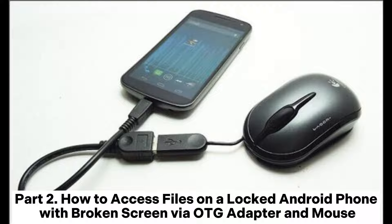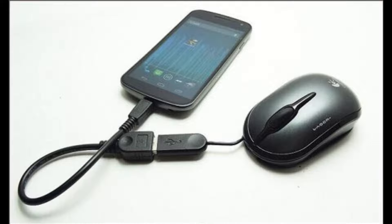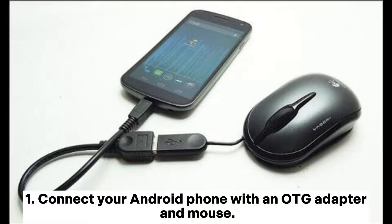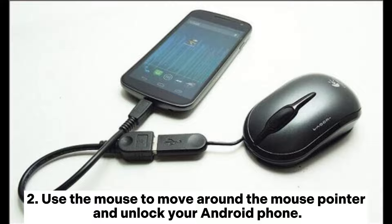Part 2: How to access files on a locked Android phone with broken screen via OTG adapter and mouse. If your broken Android phone is still responsive except for the touch screen and supports OTG, you can use an OTG adapter and a USB mouse to recover data. Connect your Android phone with an OTG adapter and mouse.